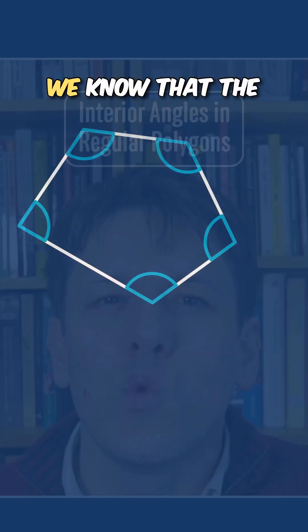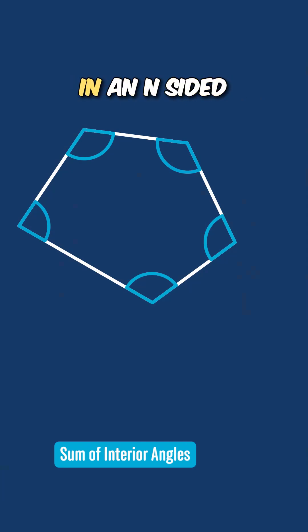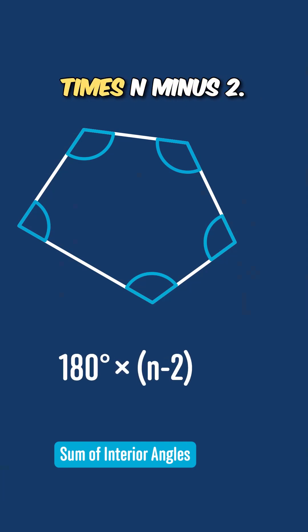Let's think about the formula for the interior angles in a regular polygon. We know that the sum of the interior angles in an n-sided polygon is 180 times n-2, and in a regular polygon, all of the interior angles are equal.